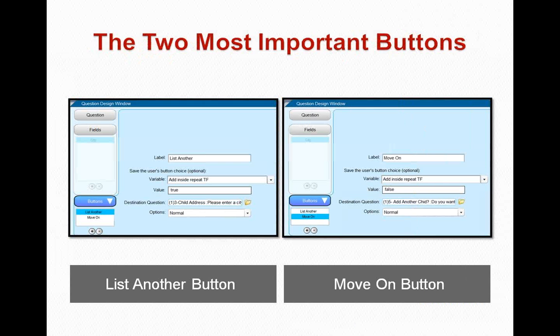Here are the two most important buttons for nested repeat loops: list another and move on. Selecting list another sets the add inside repeat true-false variable to true and sends the end user back to the same question — so every time they hit list another it takes them back to that inner loop. If they select move on, they're done entering cities for that child; add inside repeat true-false is set to false and it takes them to a destination question asking do you want to add another child, also setting the outer loop iteration based on their answers.